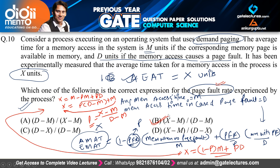So the value of the page fault rate P is (X - M) / (D - M). I hope you understood the solution properly. Now let us look at question number 11 to question number 15.